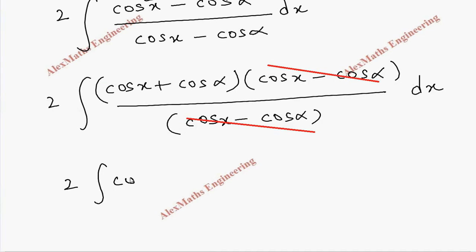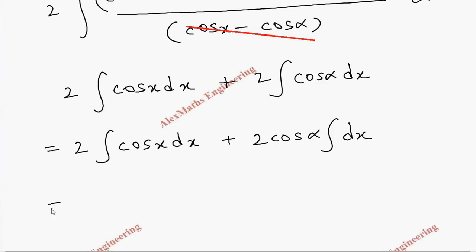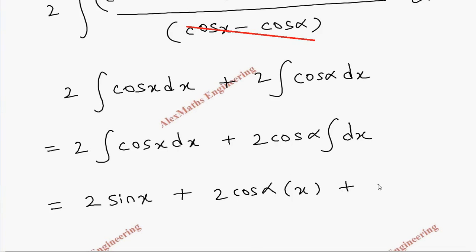After splitting we get 2∫cos x dx + 2∫cos α dx. Since cos α is a constant, we take it outside: the result is 2sin x + 2cos α · x + c.